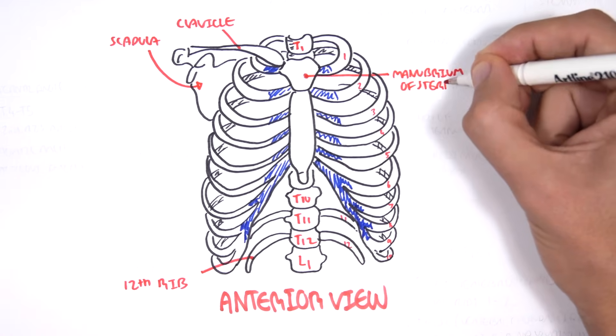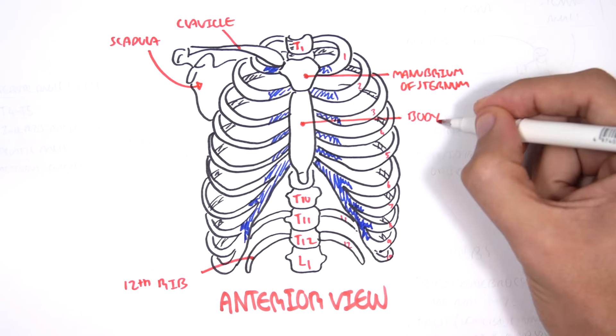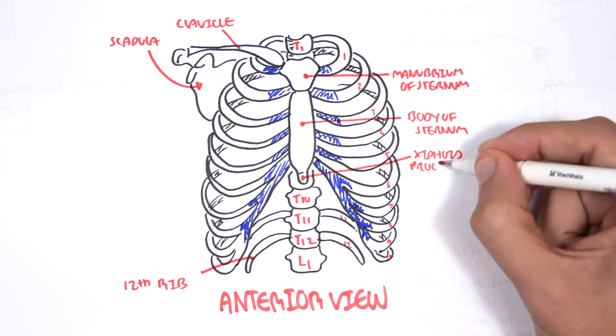The sternum itself forms three parts, the manubrium of the sternum, the body of the sternum, and the xiphoid process of the sternum.